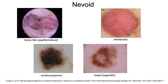A few words on nevoid melanomas, which represent a largely heterogeneous group of melanomas histologically simulating nevi. Dermoscopically, four variants were described in an ADS study published in 2015: the nevus-like, similar to a papillomatous nevus; amelanotic; multicomponent; and a mixed or aspecific pattern.